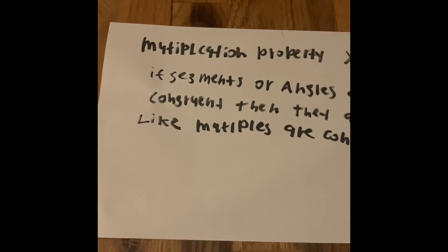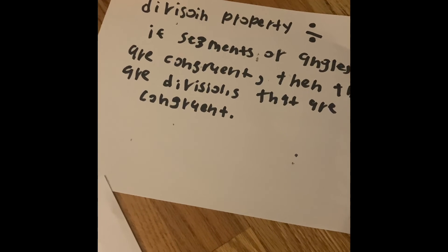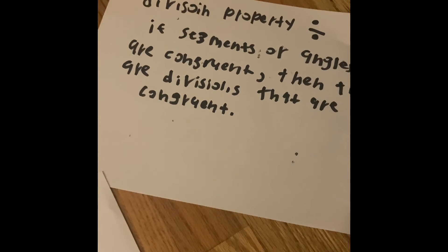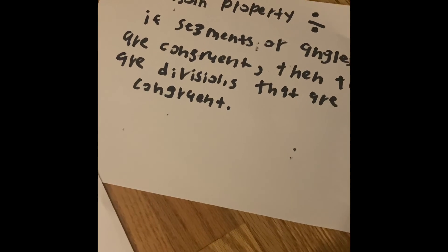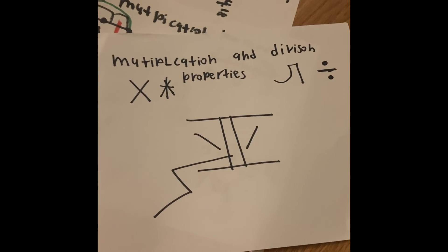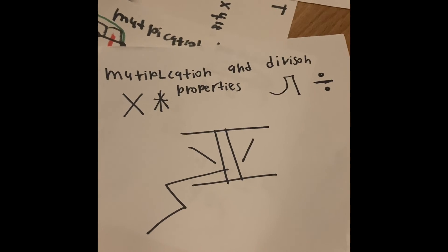Now we know the Multiplication Property and the Division Property. With division, look for repeated words like midpoint, midpoint, or bisect, bisect in the given — then find the smaller congruent segments or angles. With multiplication, you find the much larger segments or angles that are congruent. I hope this video helped you understand multiplication and division properties. Thank you for watching Lines Math Industry — like and subscribe!